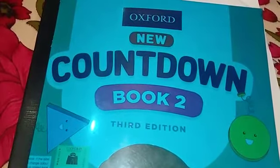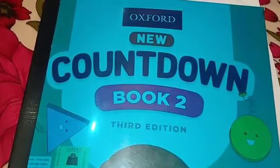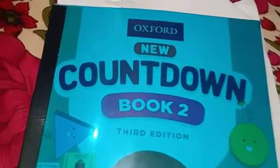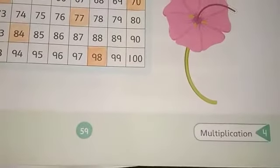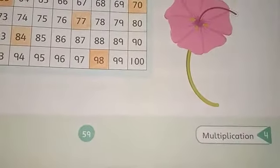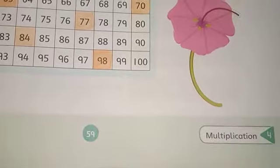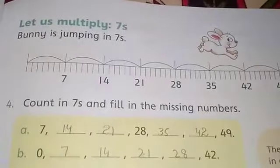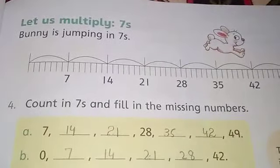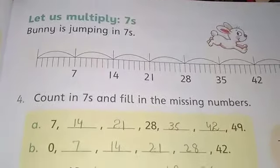Now we are going to do work of countdown. So open your countdown — the page number is 59. Your countdown, page number 59. And your topic is: Let us multiply sevens. Sevens times table.